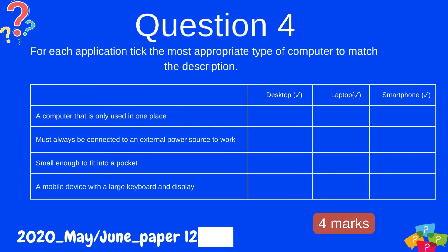Question 4: For each application, tick the most appropriate type of computer to match the description. 1: A computer that is only used in one place. 2: Must always be connected to an external power source to work. 3: Small enough to fit into a pocket. 4: A mobile device with a large keyboard and display.